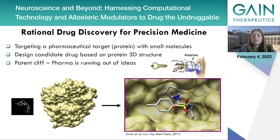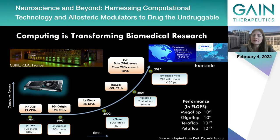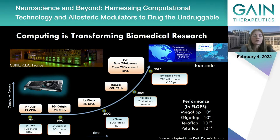So what could be done to produce more ideas? We can redefine drug discovery by using revolutionary technologies to discover new binding pockets and predict their druggability. One of the technologies currently transforming biomedical research is high-performance computing. With high-performance computing, we can now reach unprecedented length and time scales for understanding the structure and dynamics of biomolecules, enabling the generation of new therapeutic strategies.